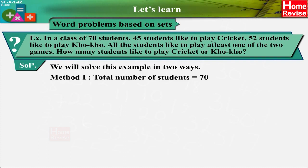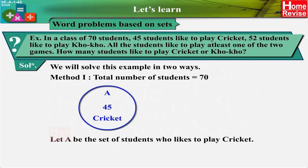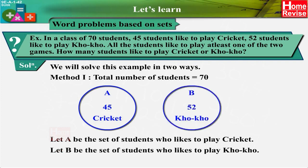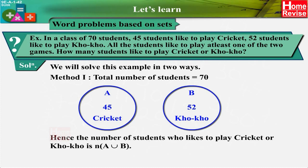Method 1: Total number of students is equal to 70. Let A be the set of students who like to play cricket. Let B be the set of students who like to play Kho-kho. Hence the number of students who like to play cricket or Kho-kho is n(A ∪ B). Therefore n(A ∪ B) is equal to 70.